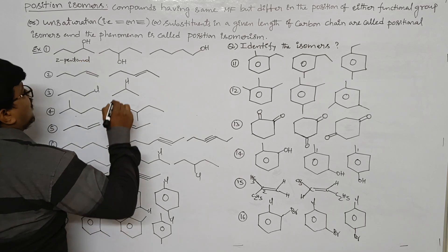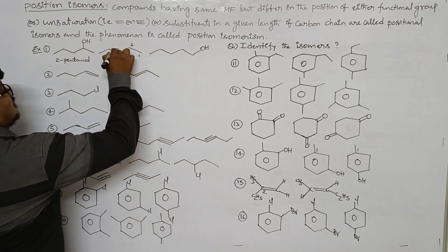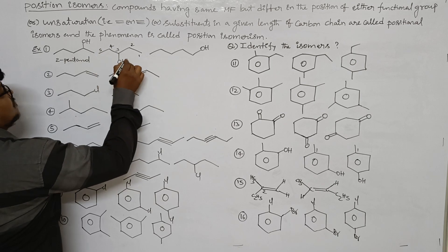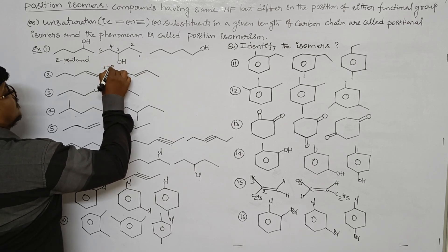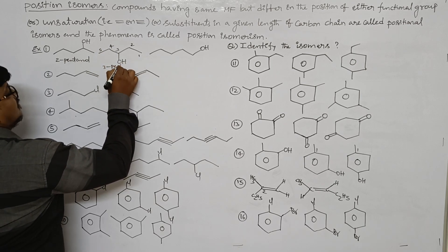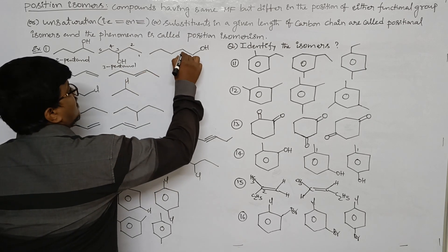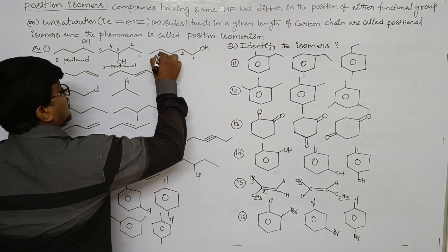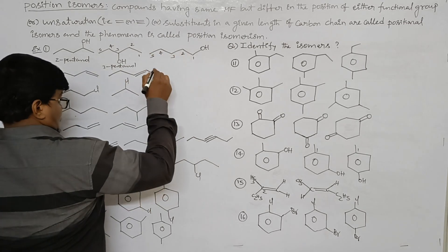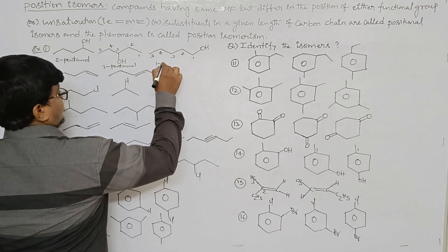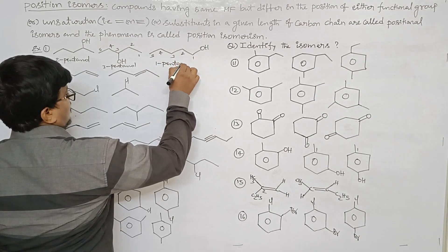The second compound has 5 carbons and is named as 3-pentanol. The next one also has 5 carbons and is named as 1-pentanol.